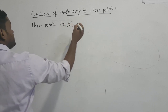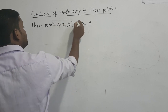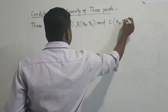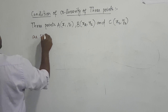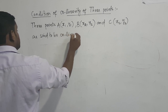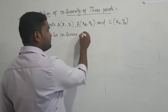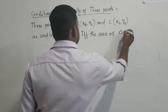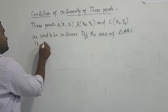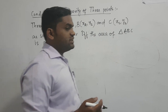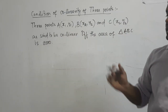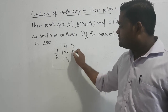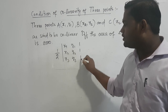So points A(x1, y1), B(x2, y2), and C(x3, y3) are said to be collinear if and only if the area of triangle ABC equals zero — that is, half of the determinant of [x1, x2, x3 / y1, y2, y3 / 1, 1, 1] equals zero.